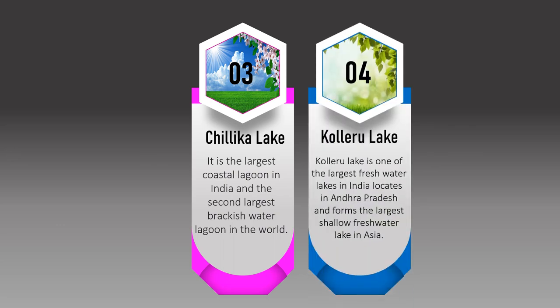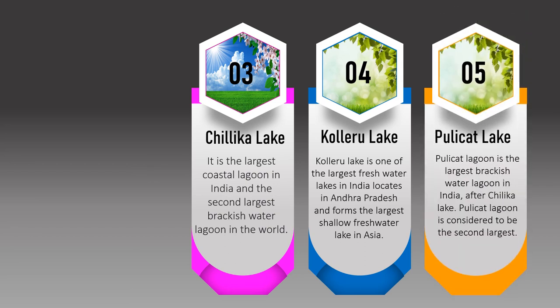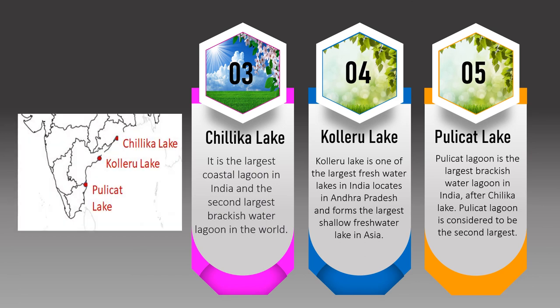Kolleru Lake is one of the largest freshwater lakes in India, located in Andhra Pradesh, and forms the largest shallow freshwater lake in Asia. Pulicat Lagoon is the largest brackish water lagoon in India and is considered the second largest after Chilika Lake. On the map: Pulicat is in Tamil Nadu, Kolleru is in Andhra Pradesh, and Chilika is in Odisha.